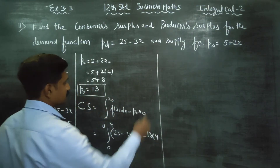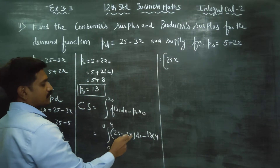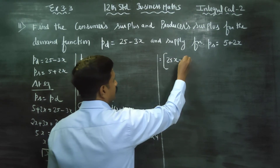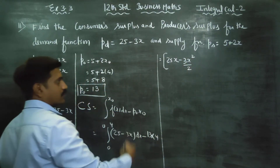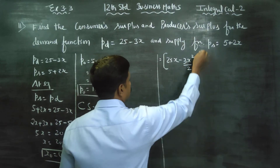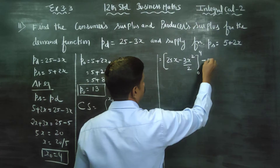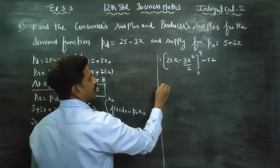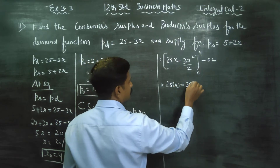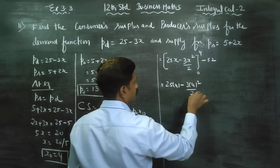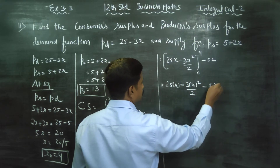We will start integrating this. Integrating 25 gives 25X; the power of X increases by 1, and integrating 3X gives 3X squared by 2. The limits are 0 to 4. Minus 13 into 4, which gives 52.